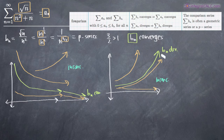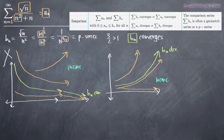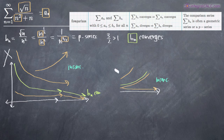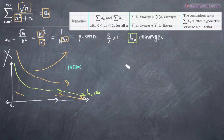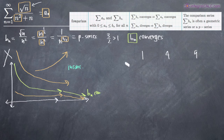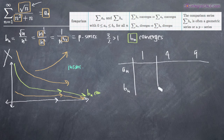Since we already know that b sub n converges, we need a sub n to be smaller than b sub n. Let's determine whether or not a sub n is smaller or larger than b sub n. Because we've got a square root of n in our a sub n series, we'll evaluate both series at 1, 4, and 9, since we can take the square roots of those numbers easily. We'll set up a table comparing a sub n and b sub n.